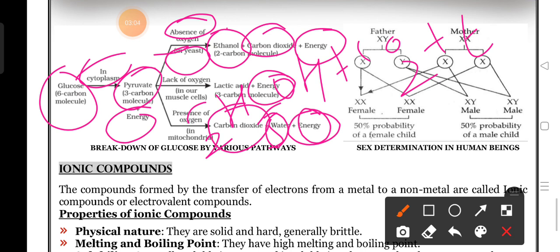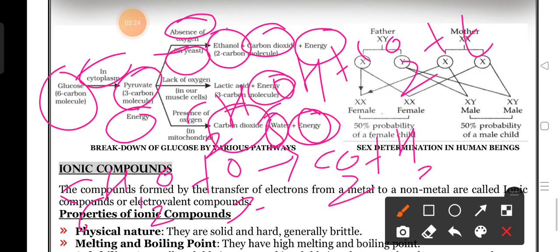Pyruvate in the case of absence of oxygen, lack of oxygen, and presence of oxygen - these three reactions they ask in the exam. If asked in the exam: glucose C6H12O6 in presence of oxygen (O2) gives carbon dioxide, water, plus energy. Very simple reaction.